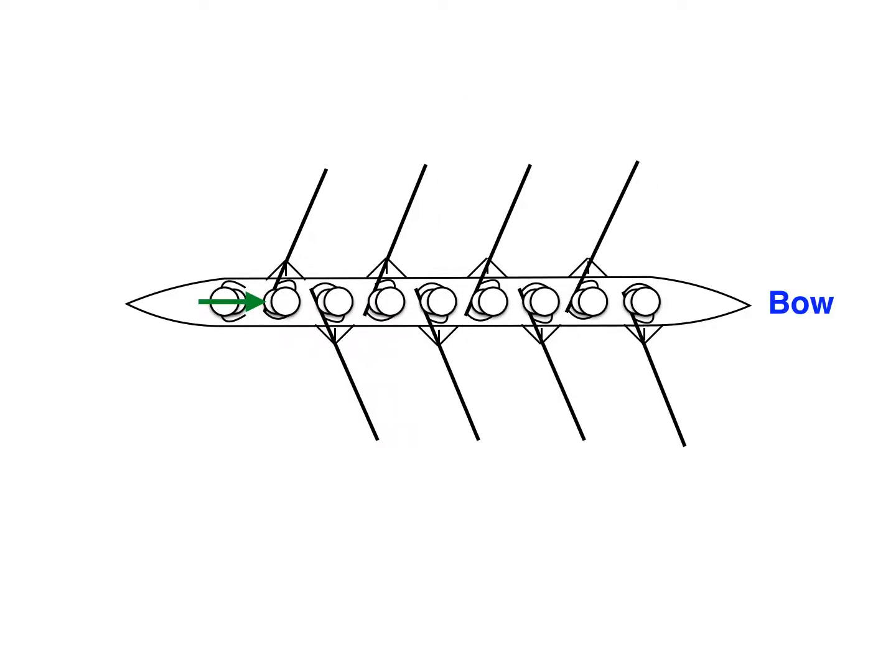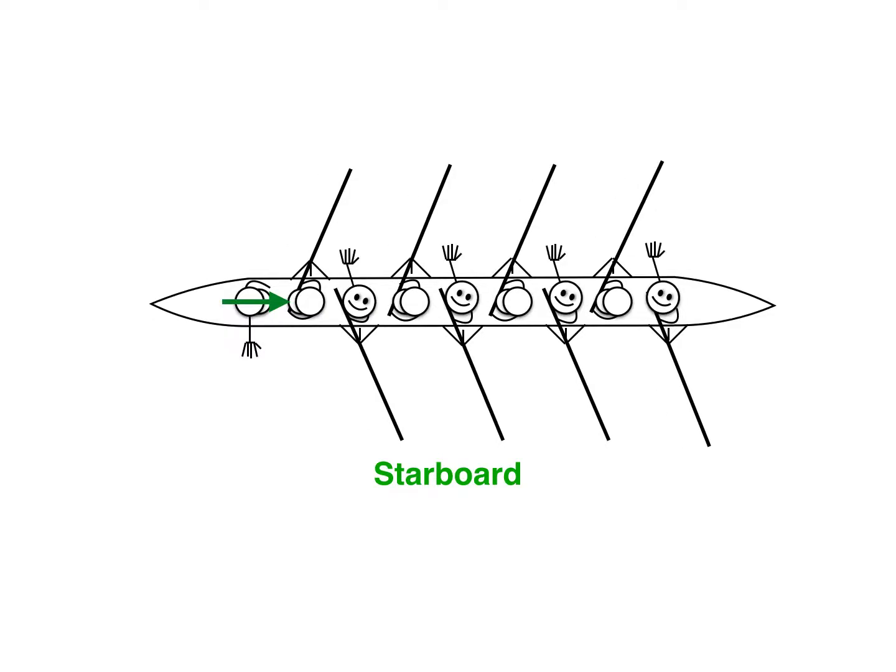Now facing the bow again, your right side is called the starboard side. Starboard side rowers, raise your hands. Awesome! As you can see, the starboard side rowers have their oars on the right side of the boat.